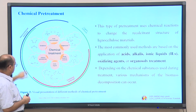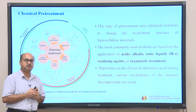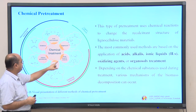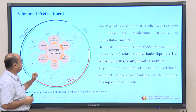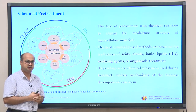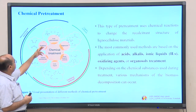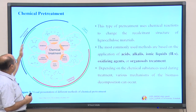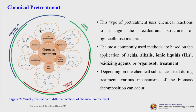The red one is for cellulose removal - whether it is ionic liquid, deep eutectic solvents, alkaline pretreatment, or part of organosolv pretreatment. Similarly, oxidative acid pretreatment and alkaline takes care of hemicellulose removal. This type of pretreatment uses chemical reactions to change the recalcitrant structure of lignocellulose materials. Most commonly used are acids, alkaline, ionic liquids, oxidizing agents and organosolv treatment. Depending upon the chemical substances used, various mechanisms of biomass decomposition can occur.